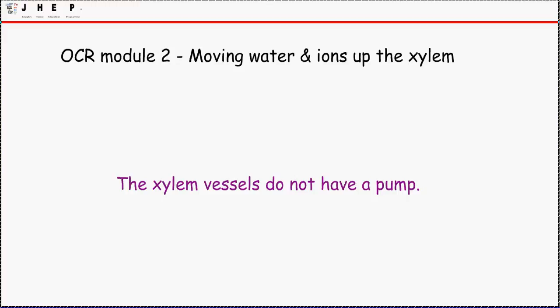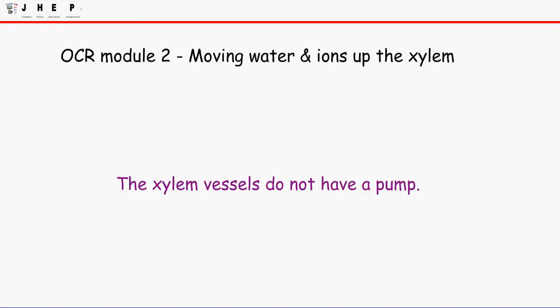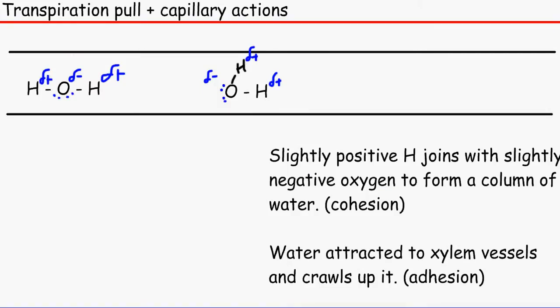The first way is transpiration pull. What transpiration pull is, is that water molecules have a slightly positive and a slightly negative charge. The slightly positive charge — this is chemistry by the way — the hydrogen has a slightly positive charge because of electronegativity, and the electrons are more pulled towards the oxygen than the hydrogen. Again, that's all chemistry, you don't need to know that.